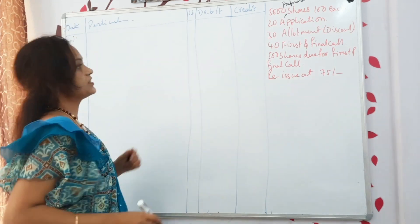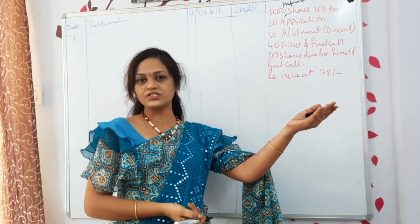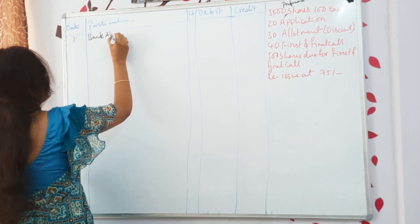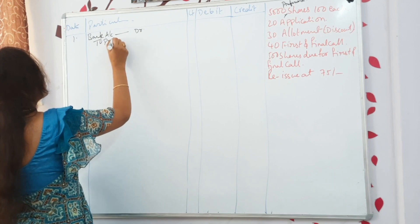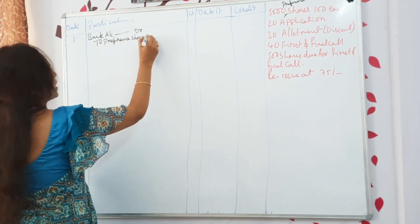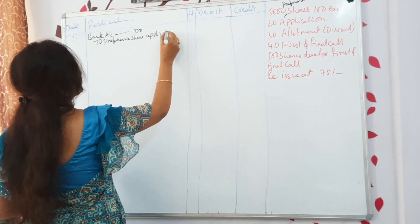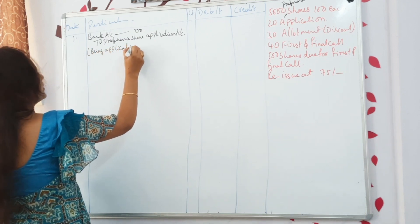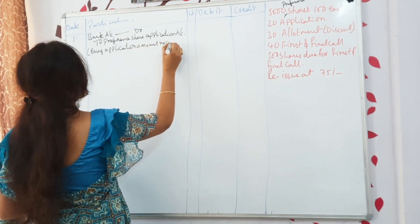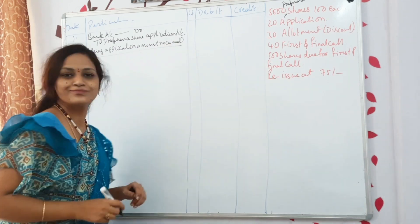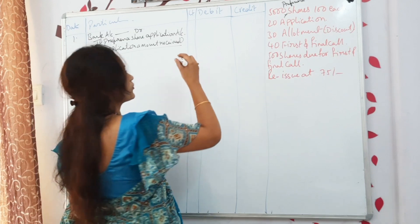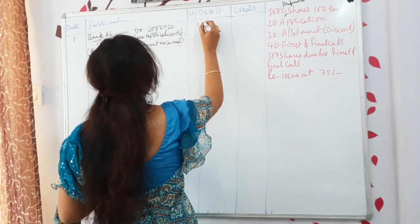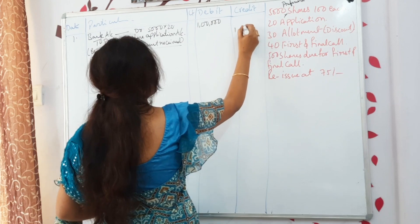Now the journal for receiving the application amount: Bank Account Dr to Preference Share Application Account. Being application amount received. The amount is 5,000 shares × ₹20 = ₹1,00,000.